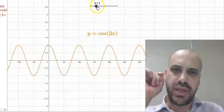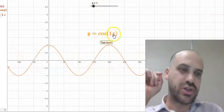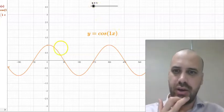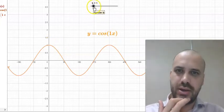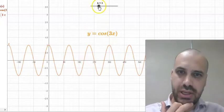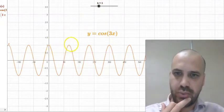Watch as I move this B value back to here. This is just cos x, the one. It was there all the time, we just don't need it there. So period, 0 to 360. B of 2, 0 to 180. B of 3, 0 to 120.